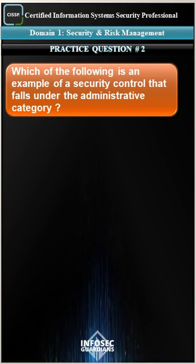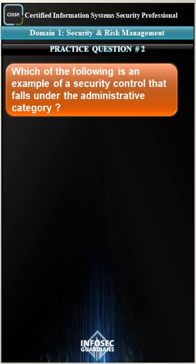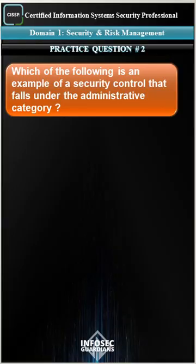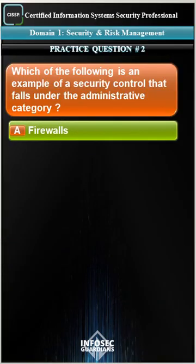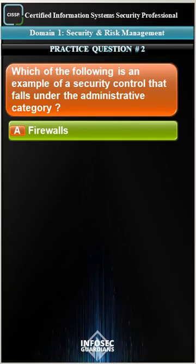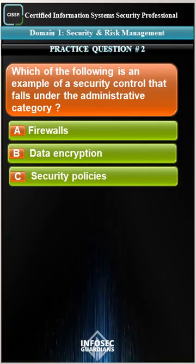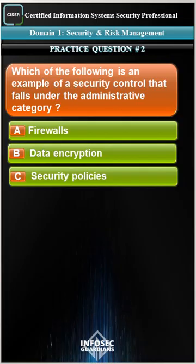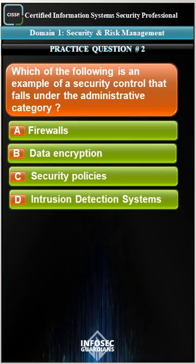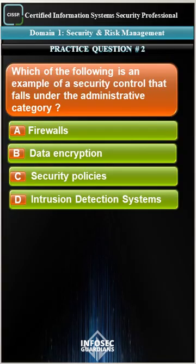Which of the following is an example of a security control that falls under the administrative category? The options are: A. Firewalls. B. Data encryption. C. Security policies. D. Intrusion detection systems.